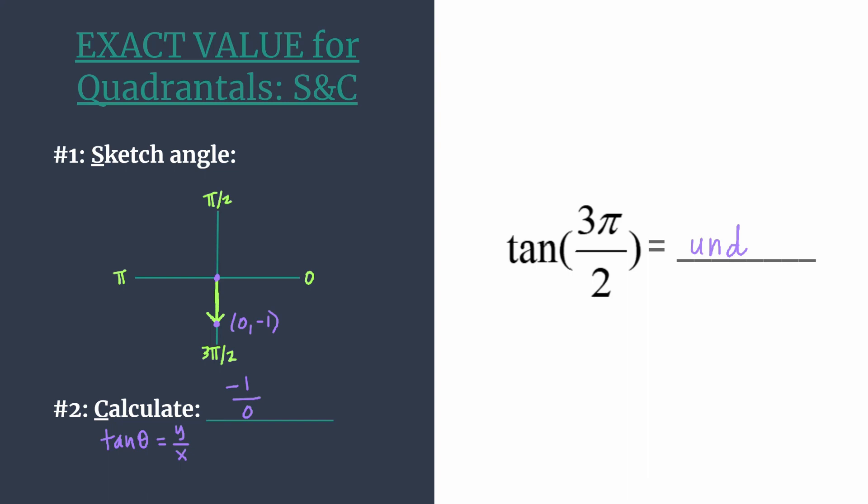So that's all there is to finding the tangent of 3 pi over 2 using the simplified SARC, the S and C method for quadrantals. Be sure to check the video description for links to more worked examples and other options for help. Thanks for watching.